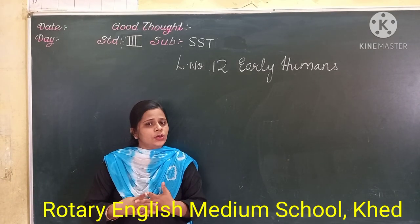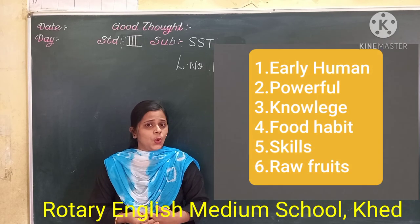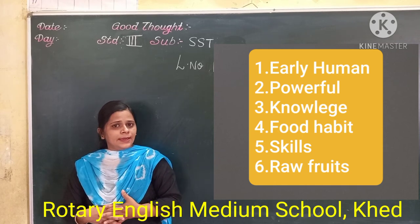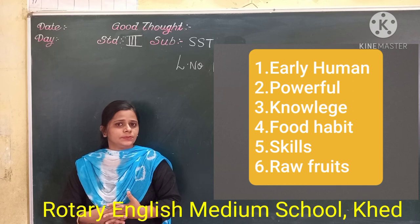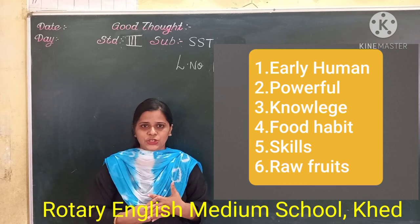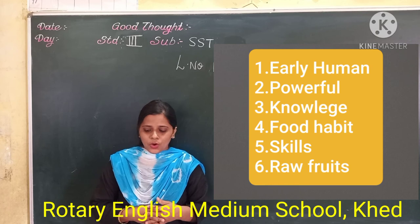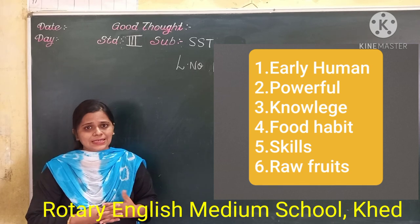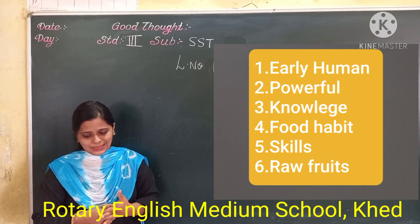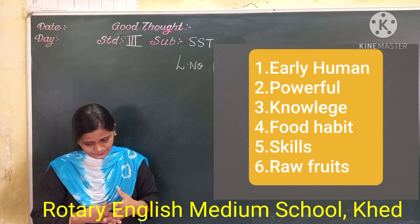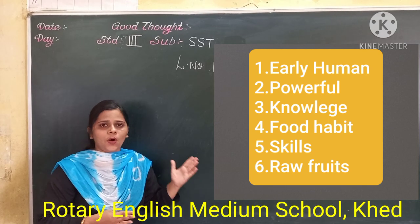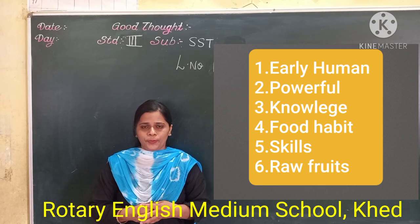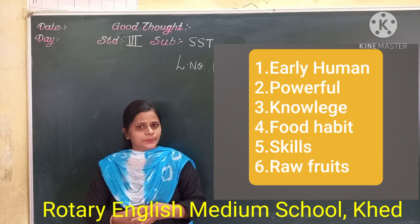Now take your new words. Today's new words are: first, early humans; second, powerful; third, knowledge; fourth, habit; fifth, skills; sixth, raw fruits. These are all your new words, which you have to copy down in your notebook. Thank you.